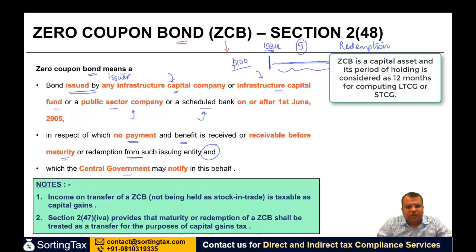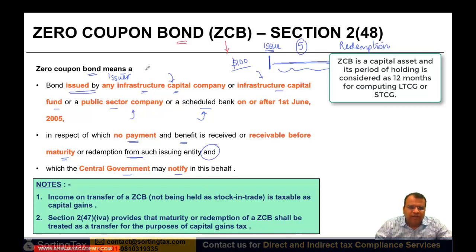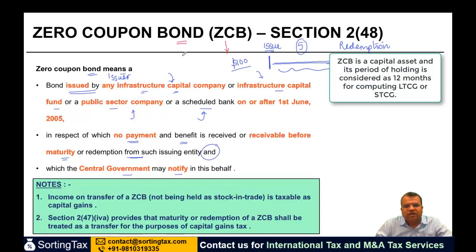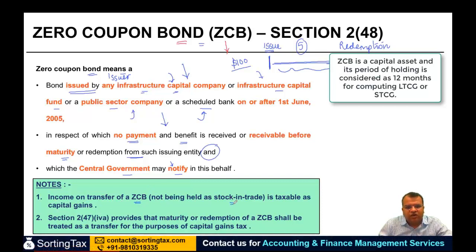The central government has to notify such bonds. It is not that any infrastructure company issuing bonds automatically qualifies as a zero-coupon bond. The central government must notify it for it to be considered a ZCB. So, the three conditions are: 1. Issued by a specific company. 2. No payment or benefit is received during the period of issue and redemption. 3. The central government should notify such bonds. Income from transfer of zero-coupon bonds, not being held as stock in trade, is taxable as capital gain. If it is stock in trade, then it is business income; otherwise, capital gain.